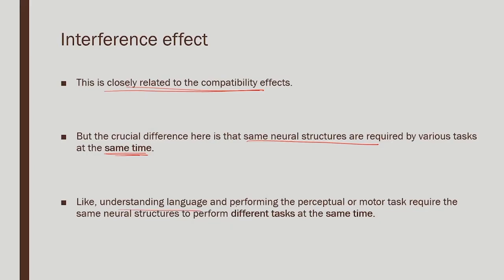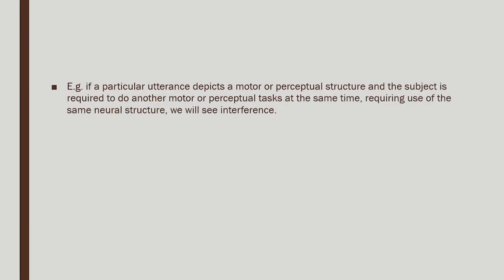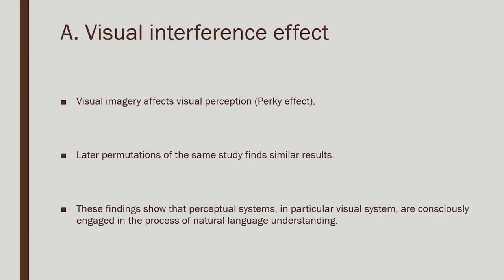Either way it proves that comprehenders simulate the scenario, and as a result the neural network is active at that time doing exactly that processing. Understanding language and performing the perceptual or motor task require the same neural structures to perform different tasks at the same time. When you give the same task to somebody already doing something else — like eating and talking — you see interference. If you are making the neural network do two different things simultaneously, we will see interference.